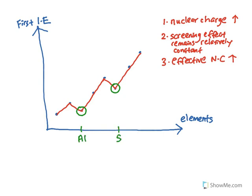Let me label all this first: sodium, magnesium, aluminum, silicon, phosphorus, sulfur, chlorine, and argon. So how come aluminum and sulfur didn't really follow the trend?